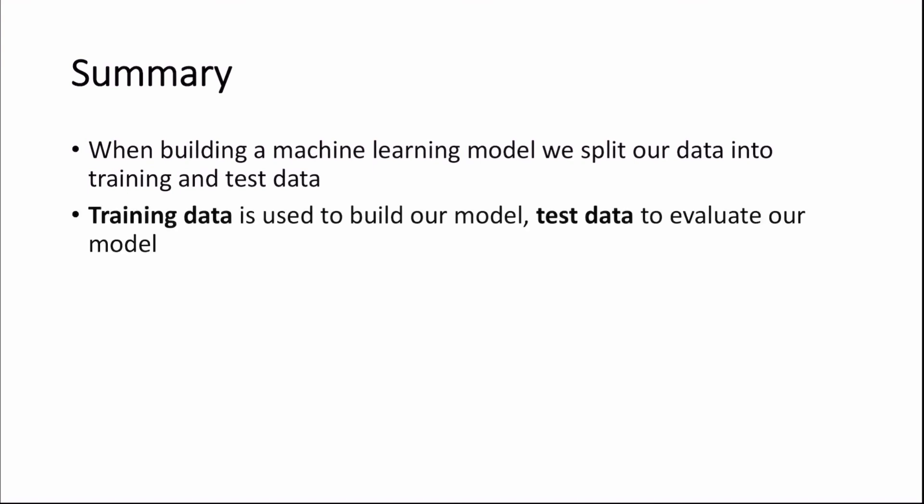So in summary, when building a machine learning model, we split our data into two sections, training and test data. The training data can be thought of as the data we use to build our model and test data to evaluate our model. And we looked at two methods in which we can split our data. That was the train test split and the k-fold cross-validation.